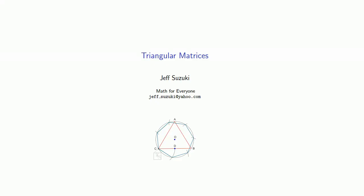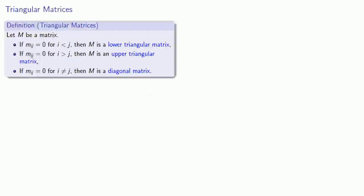An important type of special matrix is called a triangular matrix. Since every matrix we've seen has been rectangular, you might wonder how we can talk about a triangular matrix.